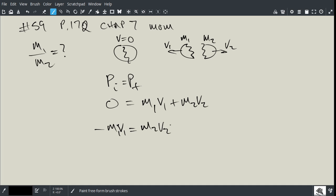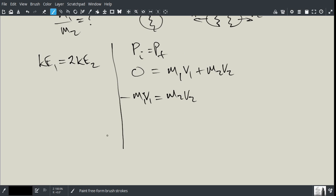But the question says that one fragment acquires twice the kinetic energy of the other. So I'm going to write down KE1 is equal to 2 times KE2. So now, what can we do with that piece of information? Let's kind of draw a line here, and let's write down the kinetic energy of 1 half M1 V1 squared is equal to 2 times 1 half M2 V2 squared.